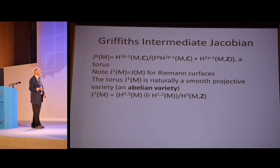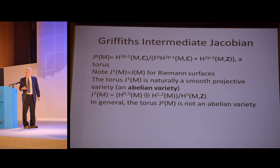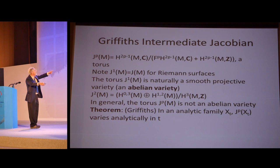Not all complex torii can be realized as smooth projected varieties, but the Jacobian always can in a natural way. If you look at J²(M), for example, this is H^(0,3) plus H^(1,2) mod H³. It turns out that in general, starting with J², this is not an abelian variety. This initially might strike you as a terrible thing, but we'll see that, as often happens in mathematics, terrible things turn out to be good things. Griffiths proved that if you define the intermediate Jacobian this way, that again, if you have an analytic family of X_t's, that these intermediate Jacobians vary holomorphically.